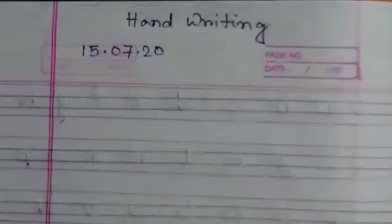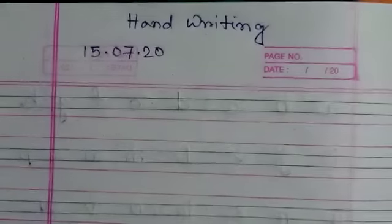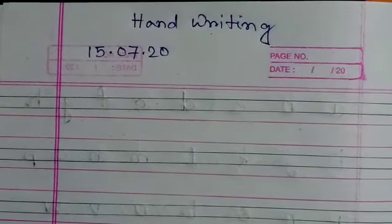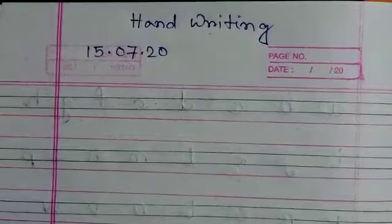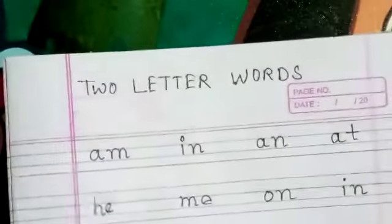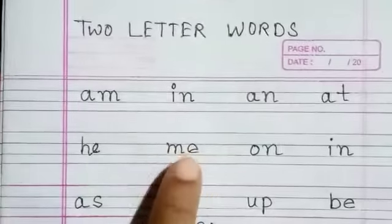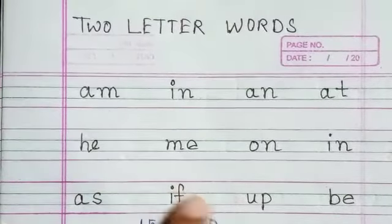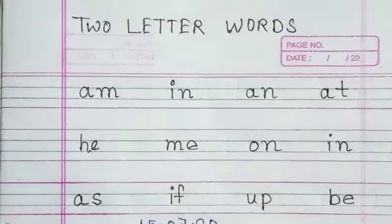Good morning children. So in previous class we have learned how to write small letters. We have learned how to write small letter words like an, am, in, an, at, he, me, on, an, in, as, if, up, and be.